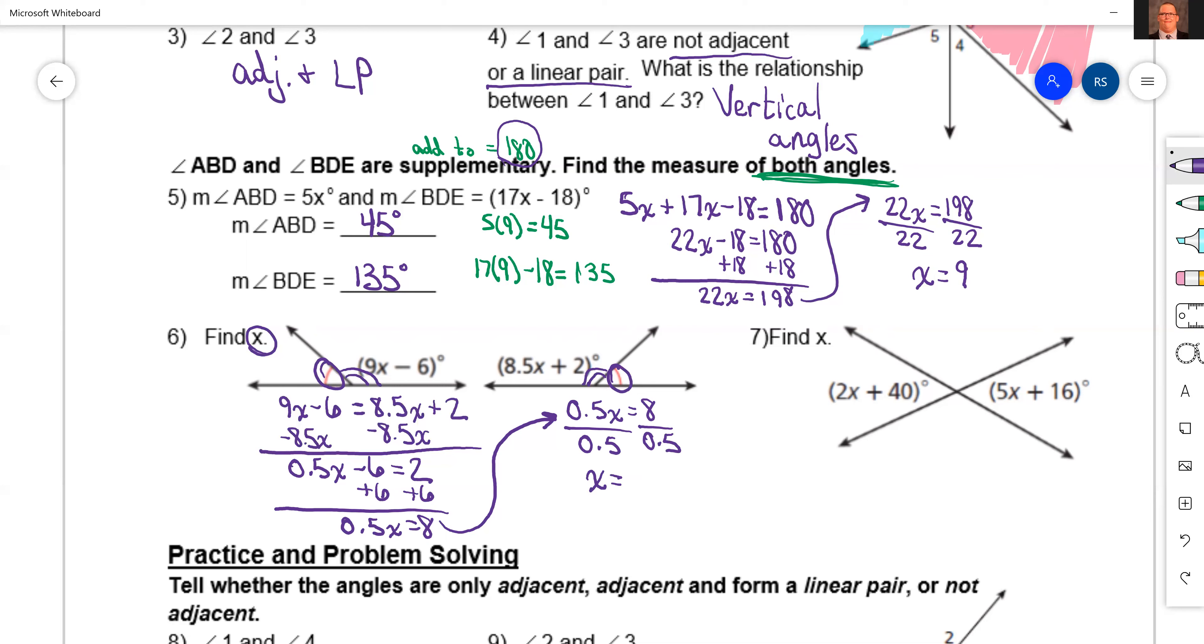It's going to give us x equals, 8 divided by 0.5 is 16. There's our final answer.